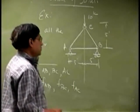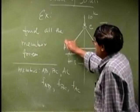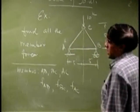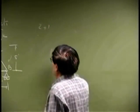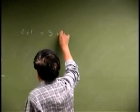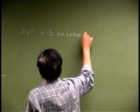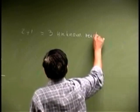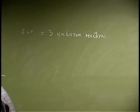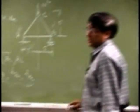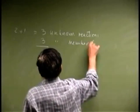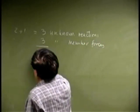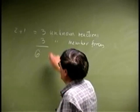Now we need to do a quick count on the unknowns. This support is a hinge, so that gives two reactions. Then there is a roller, which gives one more reaction. That gives a total of three unknown reactions. Plus the three unknown member forces, that gives a total of six unknowns.